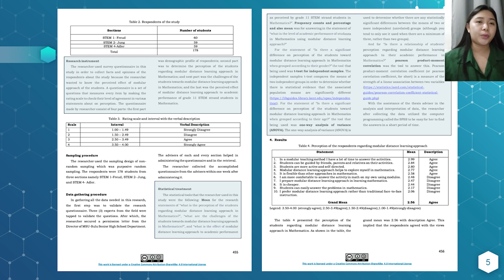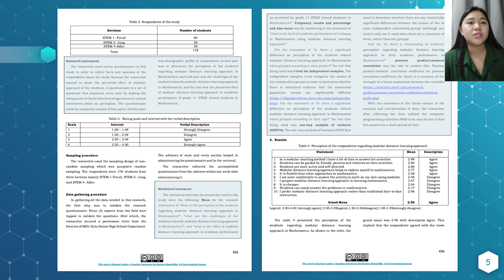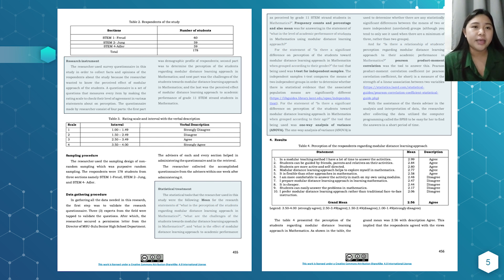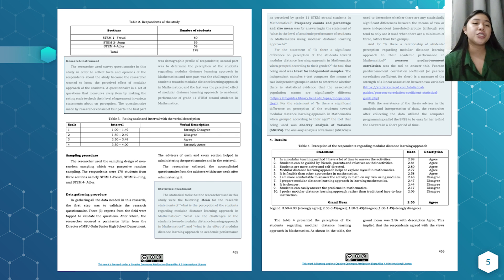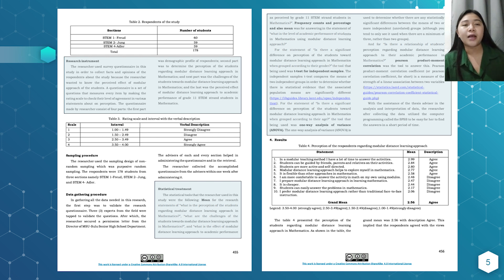For the sampling procedure, the researcher used non-random sampling — specifically purposive random sampling. The 178 respondents came from three sections: STEM 1 (Freud), STEM 2 (Chong), and STEM 4 (Adler).